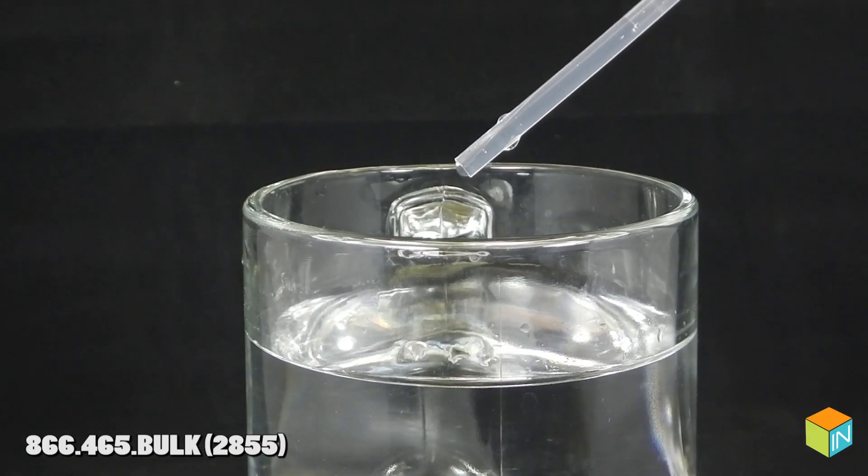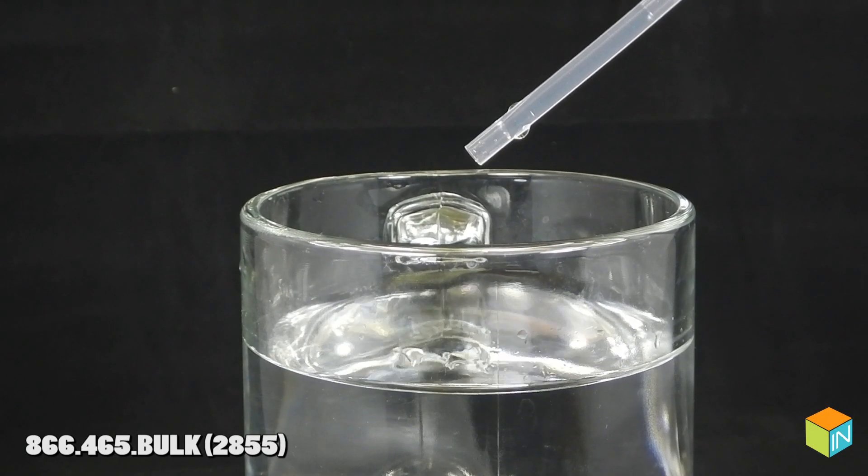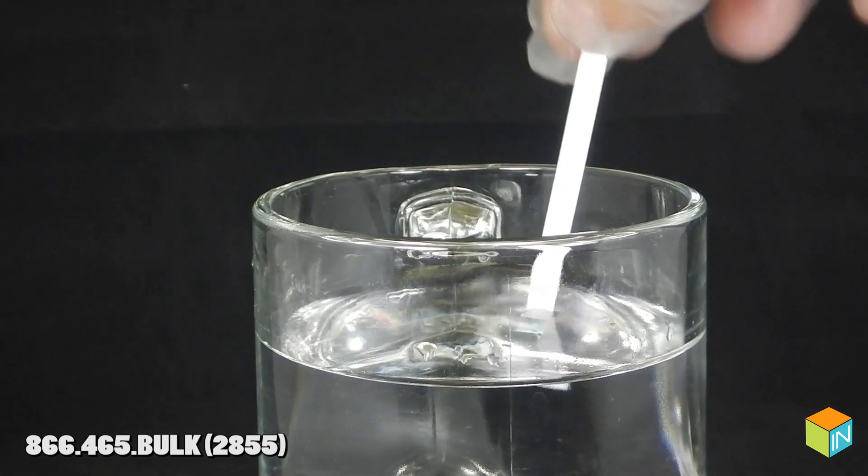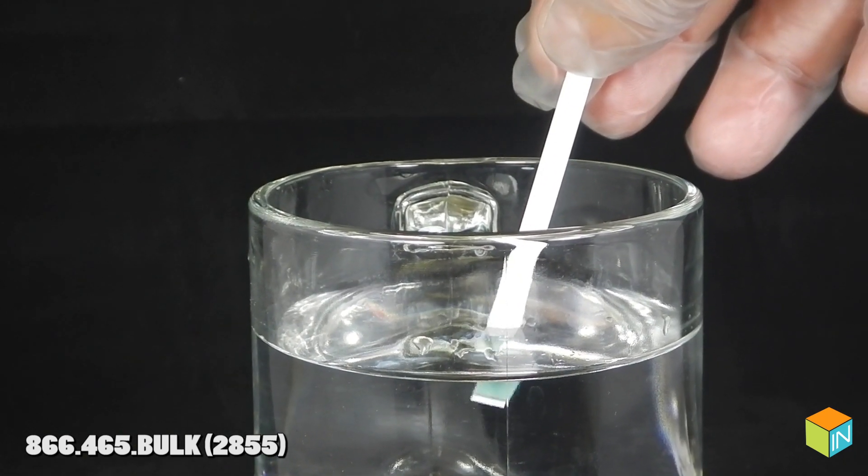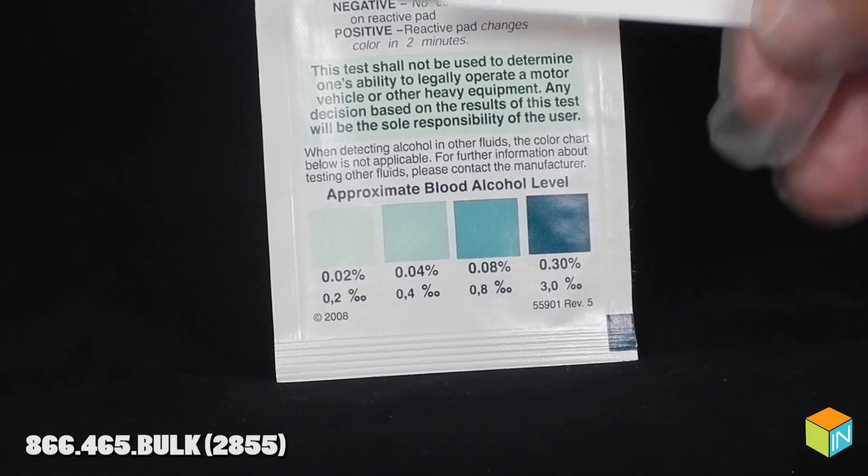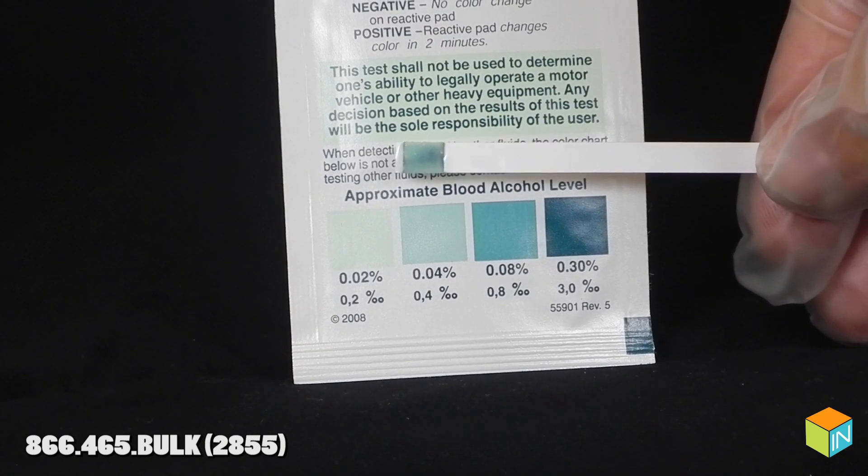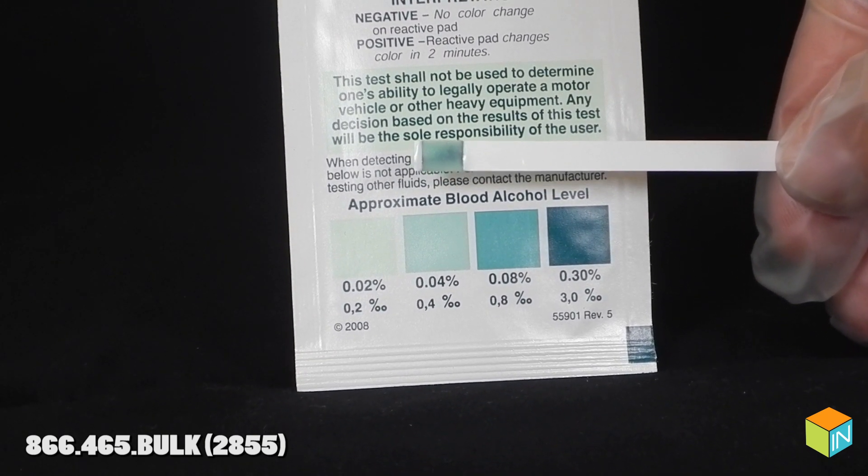For a quality check, proper performance of AlcoScreen can be confirmed by testing a mixture of 4 drops of 80 proof distilled spirits in 1 cup of water. The results should be equal or higher than the 0.04% color block.